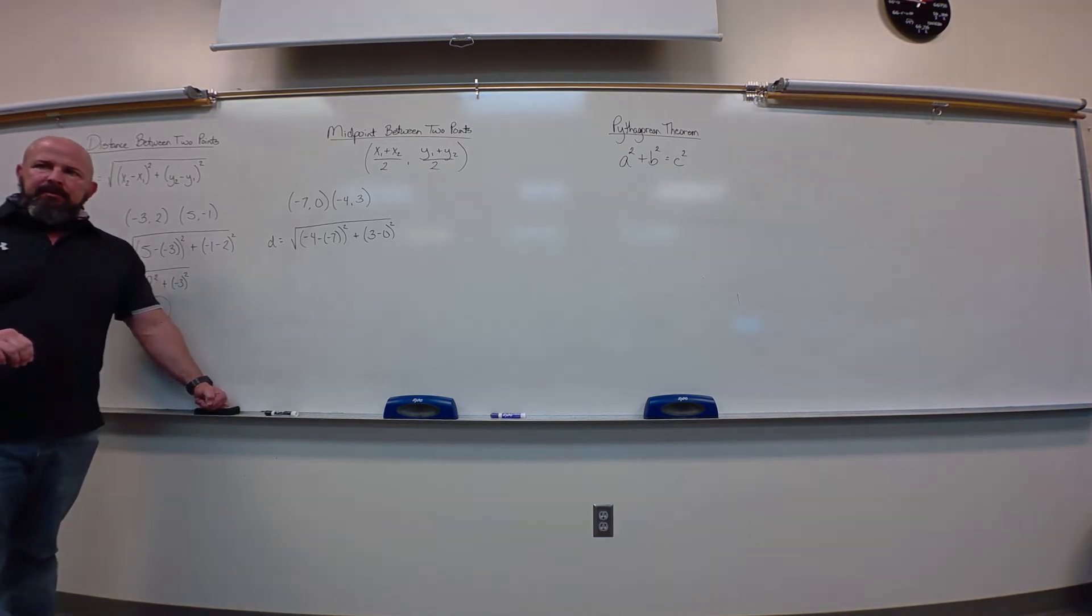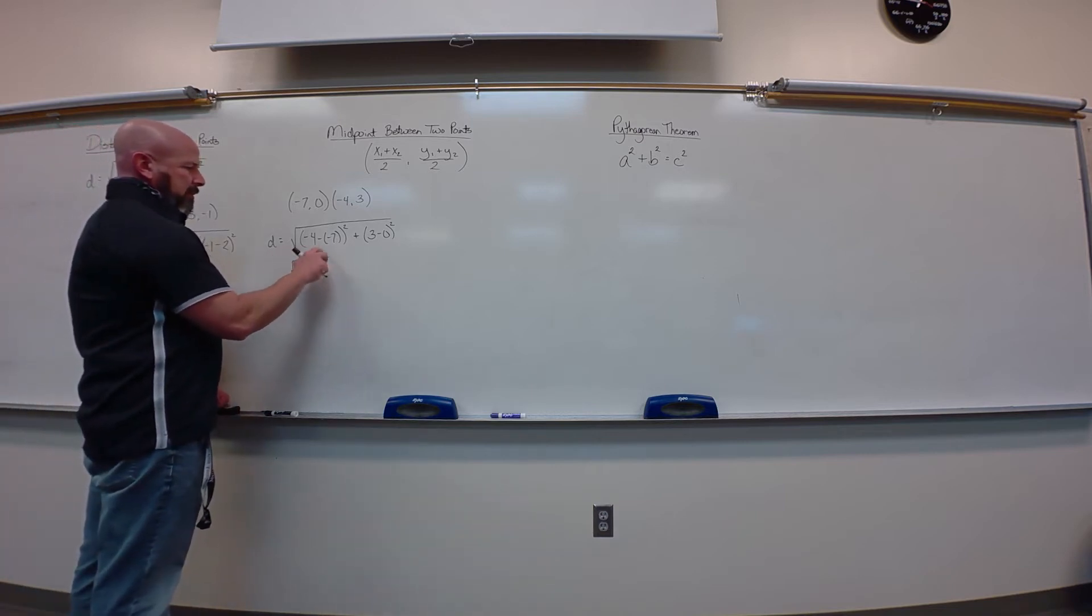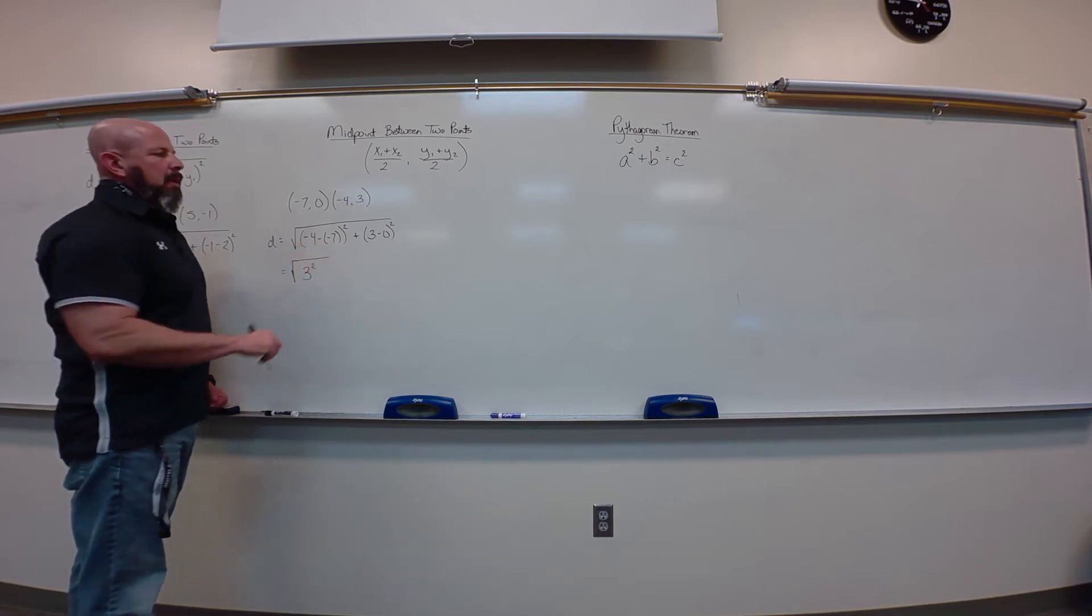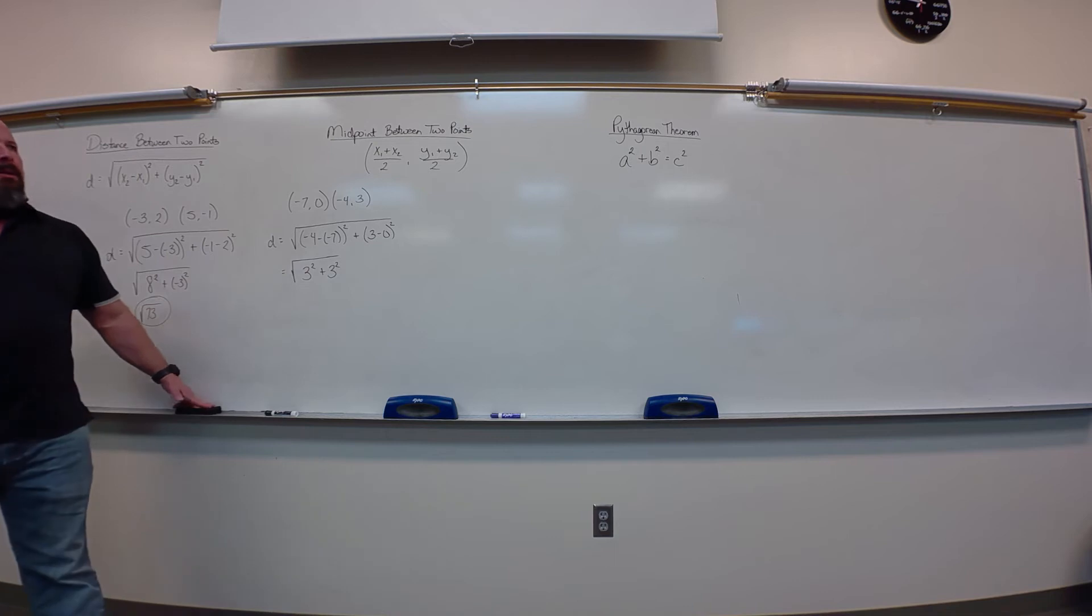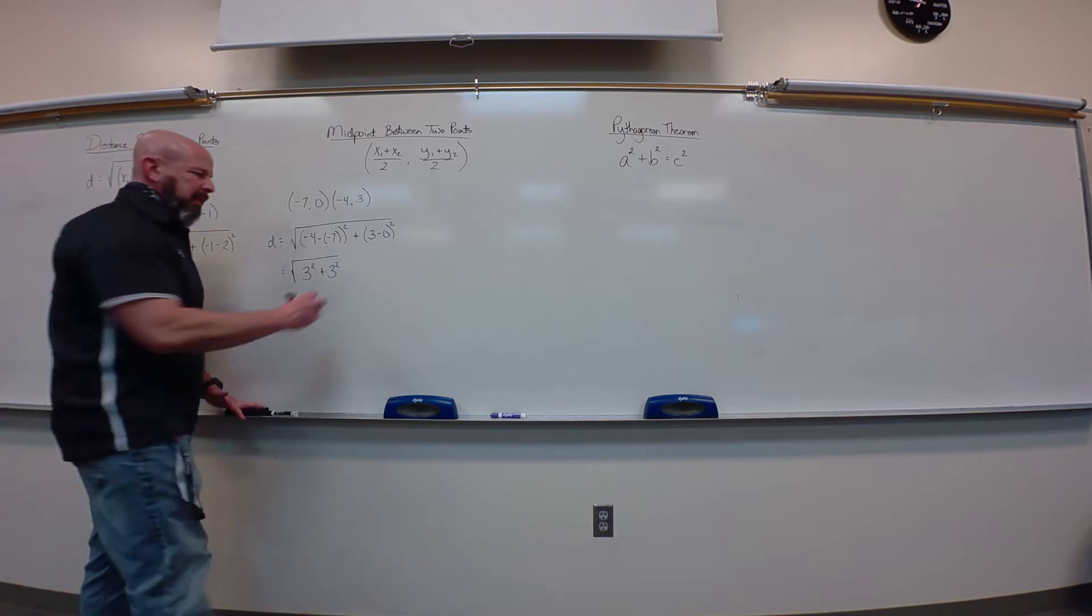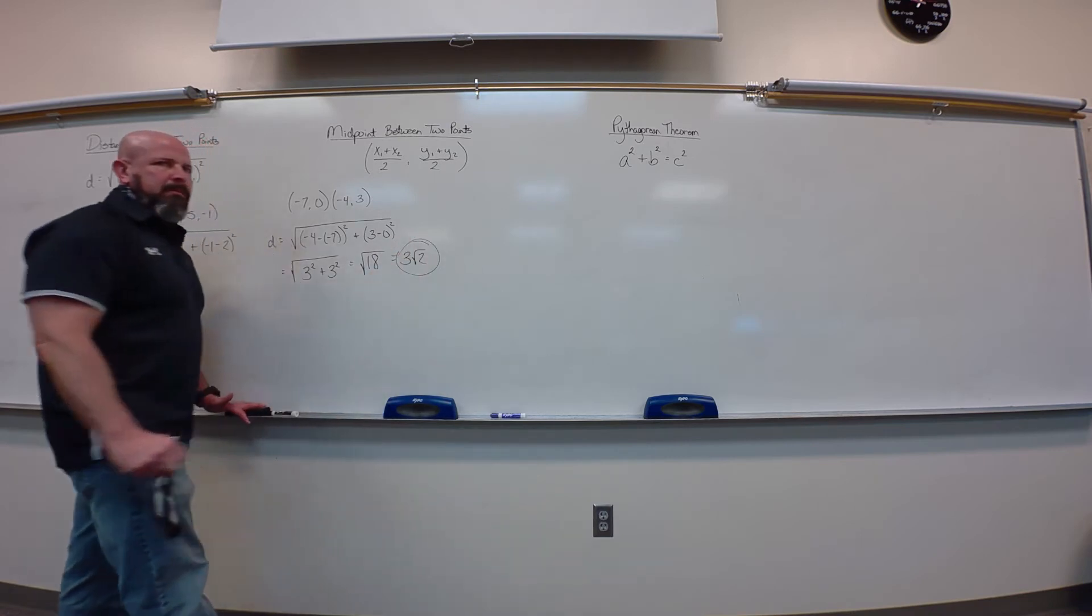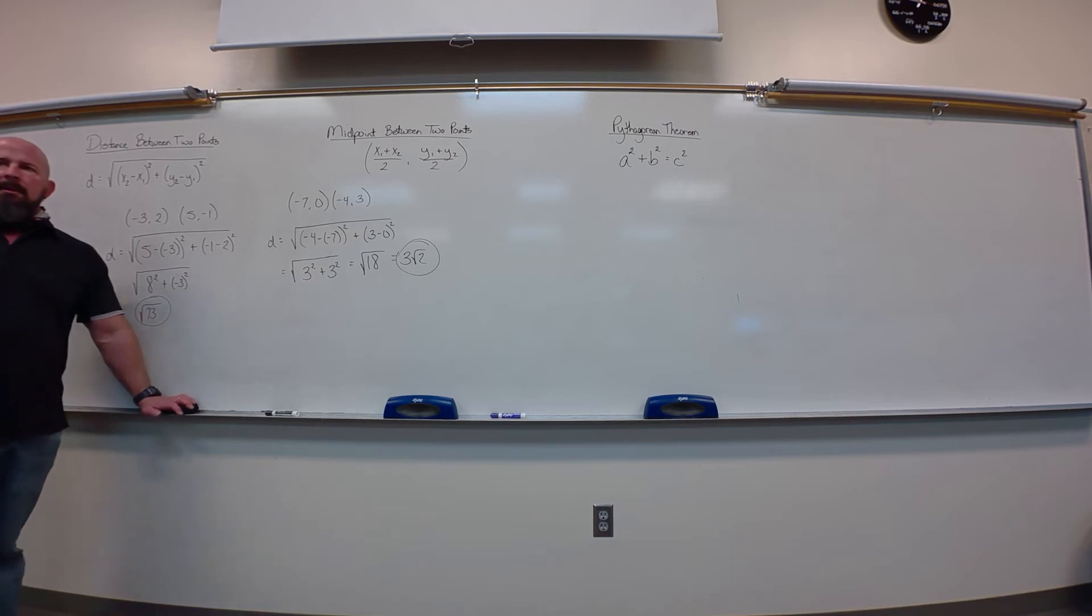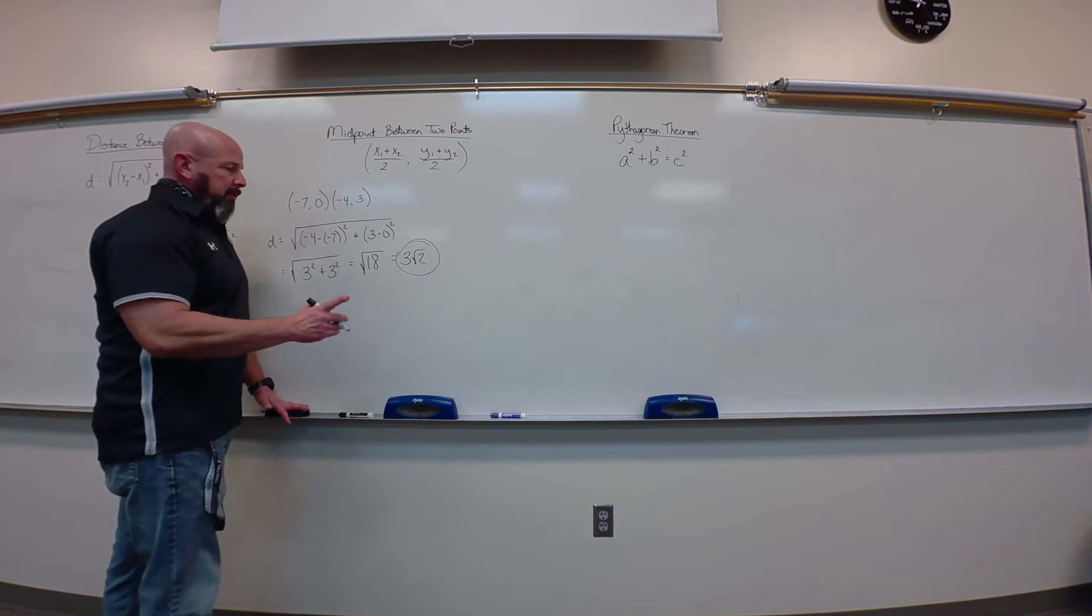So, let's see, negative four minus the negative seven, that's a positive three. Three minus zero is also a positive three. So, we've got three squared plus three squared is the square root of 18. Not too bad there. This one does simplify to three root two. We want to simplify the radicals. This is going back to last year. We've got to simplify the radicals. I wouldn't care if you've got a decimal, but to review how we simplified it,